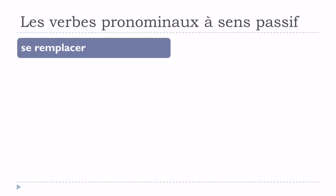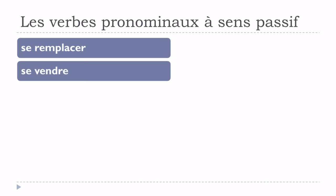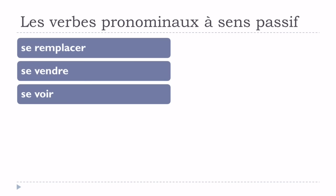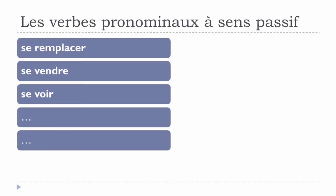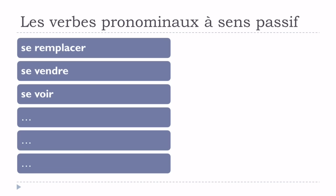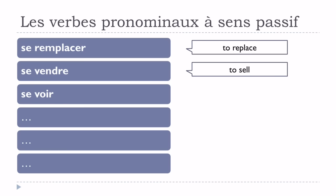Se remplacer, se vendre, se voir — and that's it. Remember that all the verbs presented in this video can work as verbes pronominaux à sens passif.